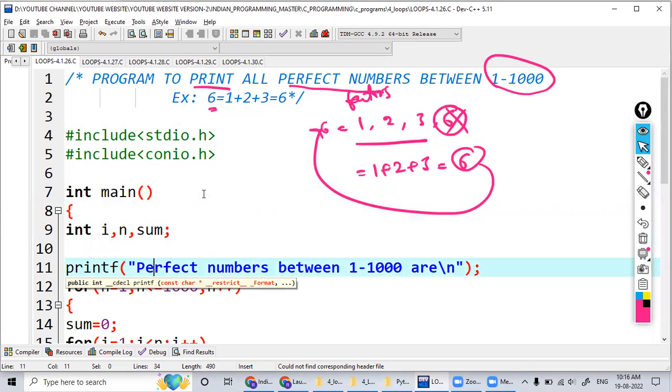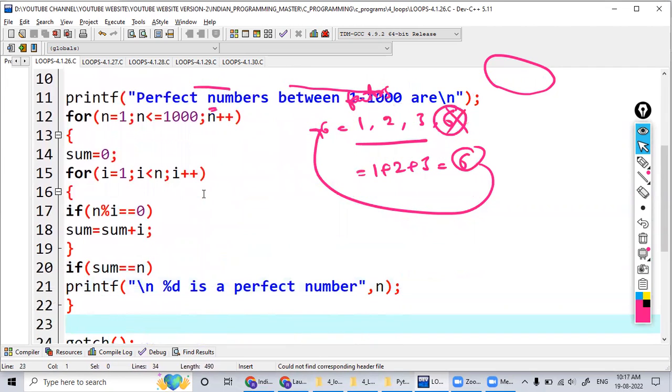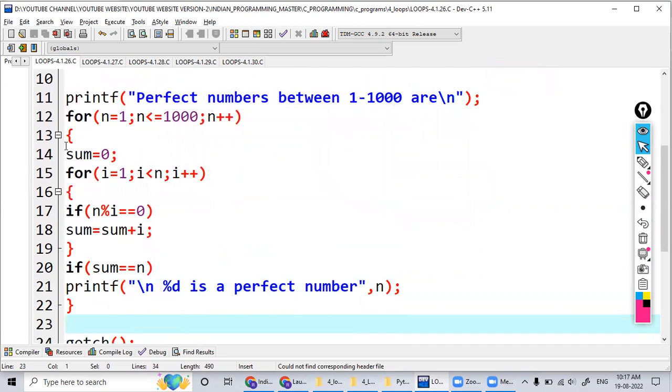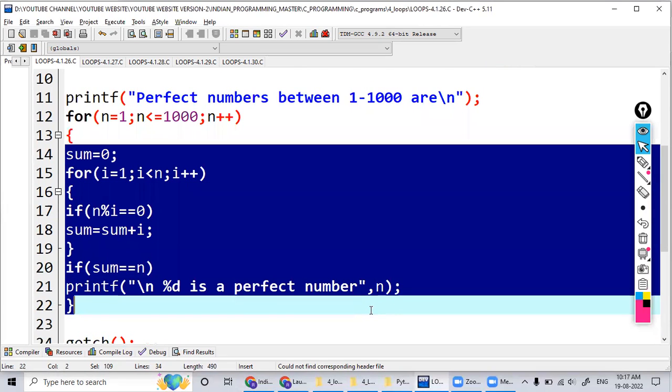Now I'm extending that program here for the range. See the logic here. This is to check whether the particular number is a perfect number or not. I'm using one more for loop to repeat the process for the numbers.